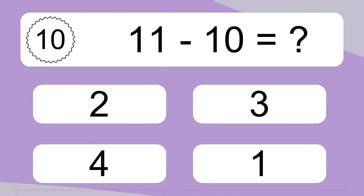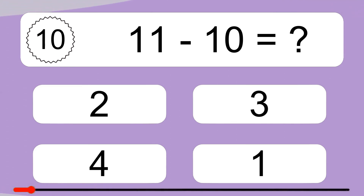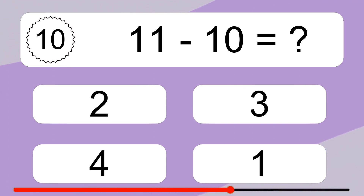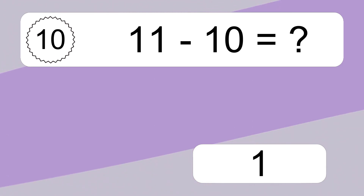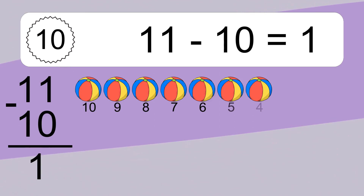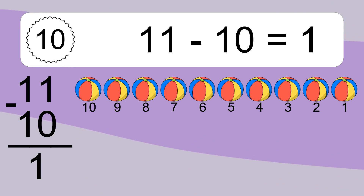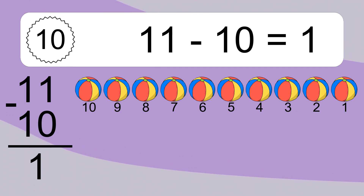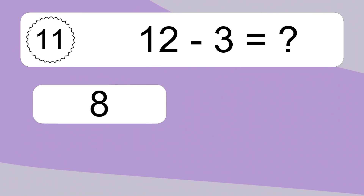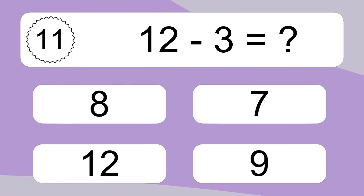11 minus 10 equals what? 11 minus 10 equals 1. Let's count it. 10, 9, 8, 7, 6, 5, 4, 3, 2, 1.